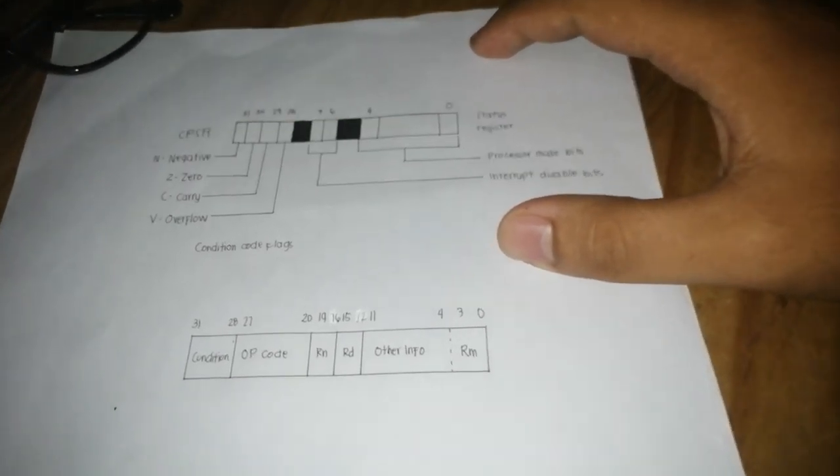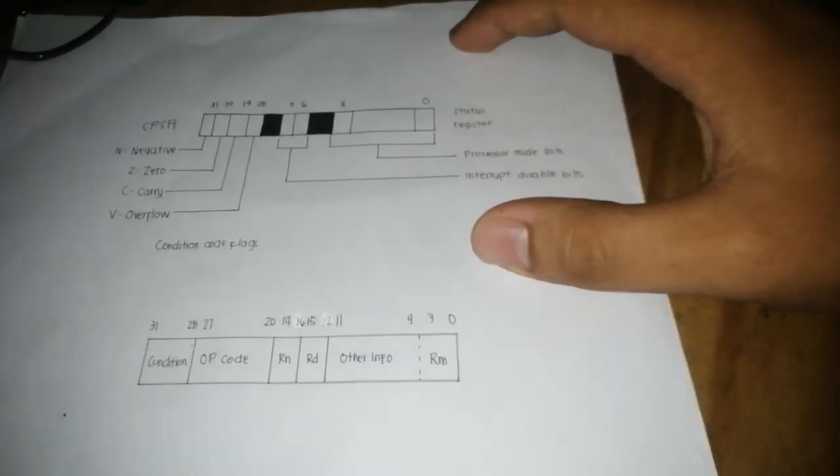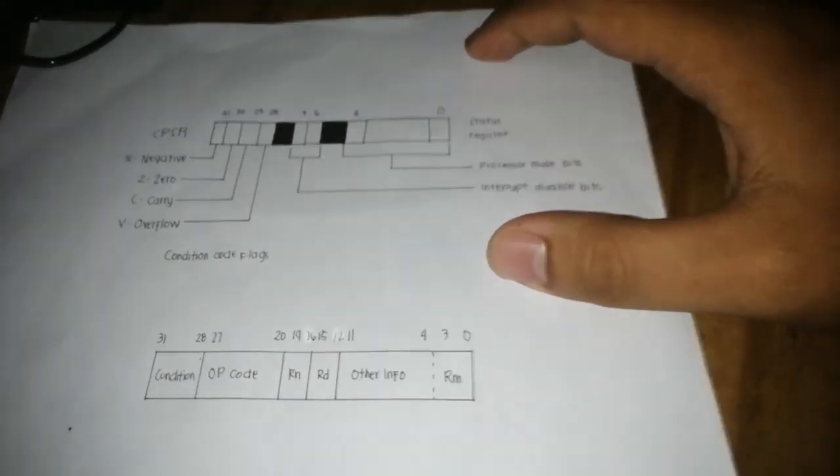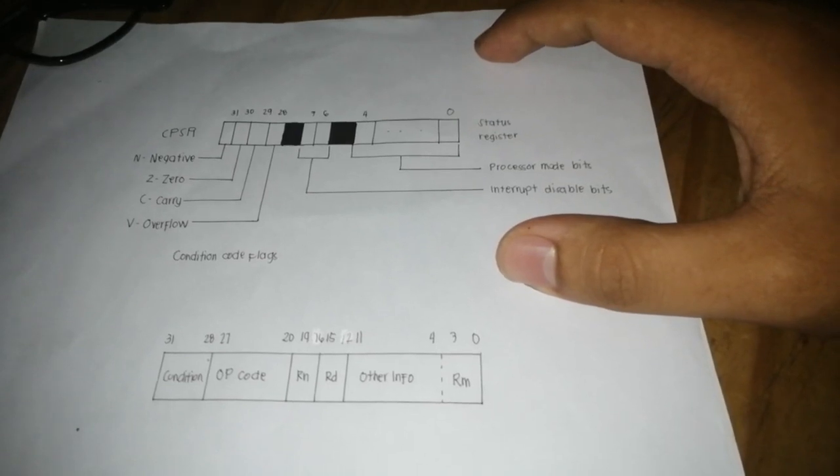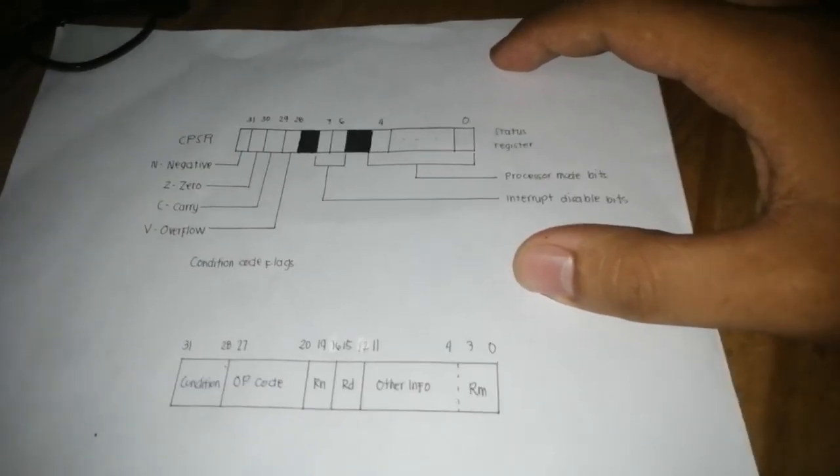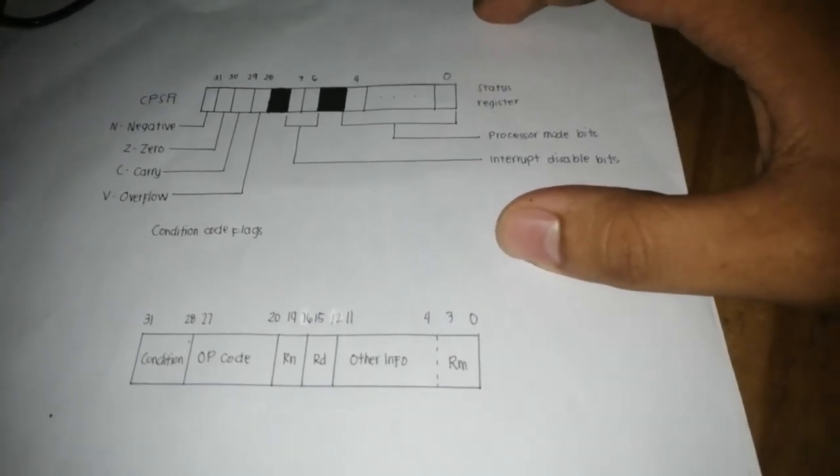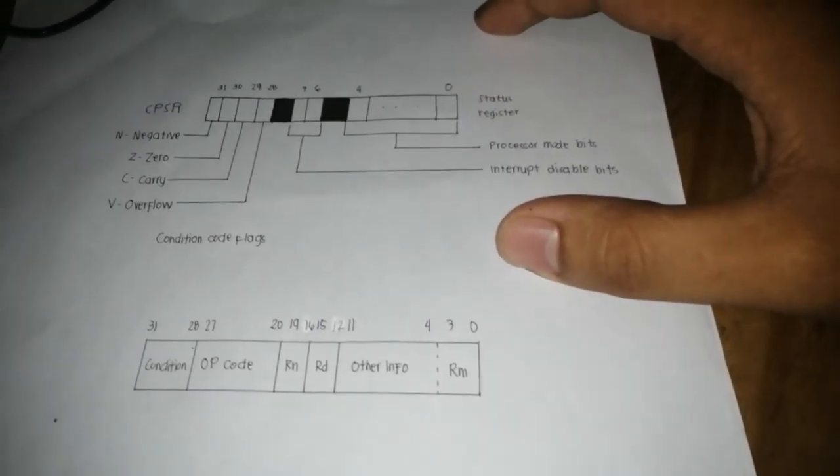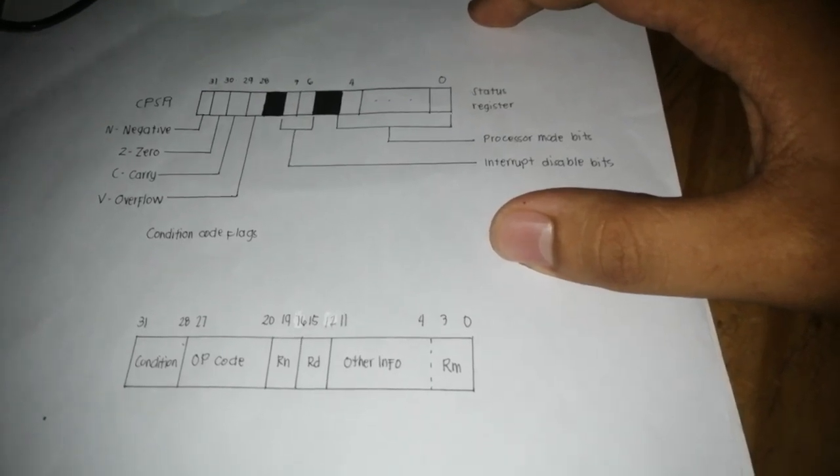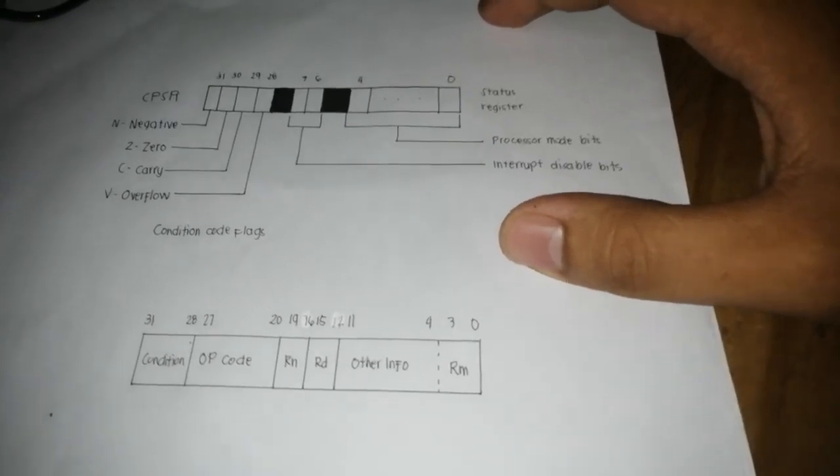There are seven basic operation modes in ARM. The user is the unprivileged mode under which most tasks run. FIQ is entered when a high priority interrupt is raised.